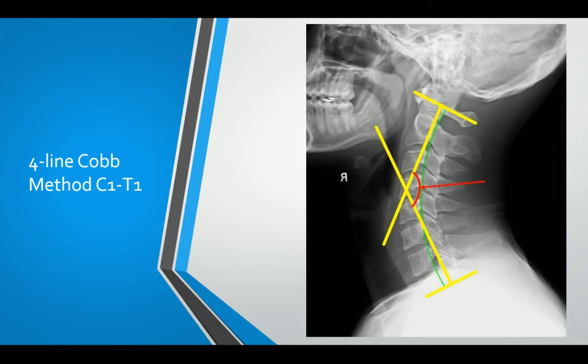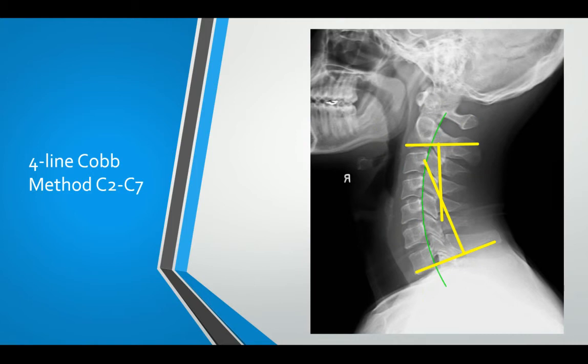Whilst this method has been shown to be repeatable and reliable, there are a few flaws we're going to discuss. As you can see from this example, when we bisect C1 and use the end plate of T1, we get quite a large angle of lordosis indicated by the red arrow. One of the big flaws is very simple — all you need to do is use two different points for your lines and you get a completely different angle. Here's the same image with lines drawn from the end plate of C2 and the inferior end plate of C7, and you notice a significantly different angle is formed. This calls into question the validity of the four-line Cobb angle, especially when used for lordotic measurements.